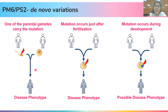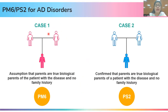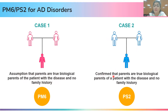Next, attributes are about de novo variations. De novo variations occur due to three mechanisms. First, when one of the parental gametes carries the mutation — in this case, the sperm. Second, when the mutation occurs just after fertilization and was not present in the parents before. Third, when the mutation occurs during development. In case 1, the child carries a de novo variation and we assume the parents are true biological parents of the patient with the disease and no family history — we assign PM6, which is moderate evidence for pathogenicity. In case 2, a de novo variation is present in the patient and absent in the parents, and it is confirmed that the parents are true biological parents of the patient with disease and no family history — we assign PS2, which is strong evidence for pathogenicity.